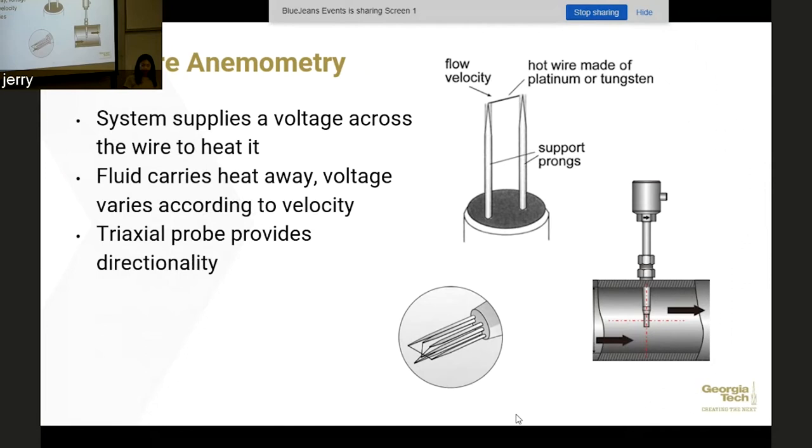This top picture just shows a one-dimensional probe, but the bottom picture shows probes that are two-dimensional, three-dimensional. This tri-axial probe on the bottom shows a probe with three wires that can measure velocity in three different components. Something important to note is that since you're only measuring the voltage which is a scalar value, you can only resolve the directionality if you know the mean direction of the flow. For example, if you have flow coming over the wire you can measure velocity but you will only know the direction of the velocity if you already know the direction of the flow, like in a wind tunnel or something like that.